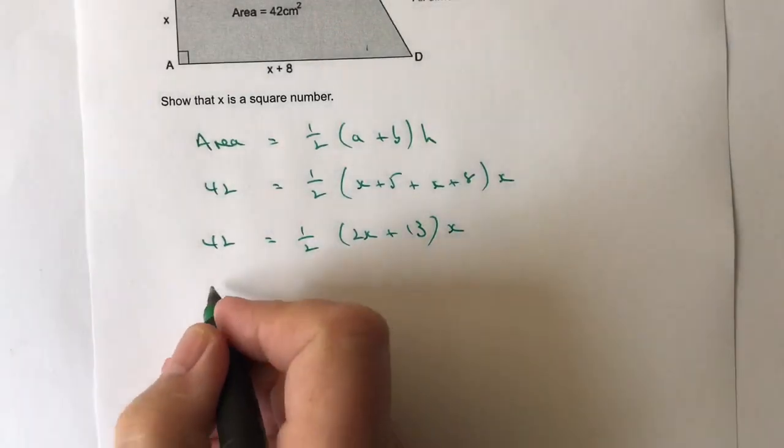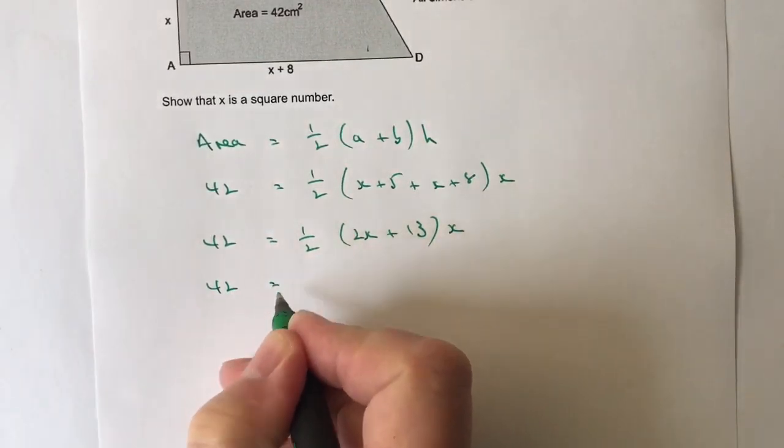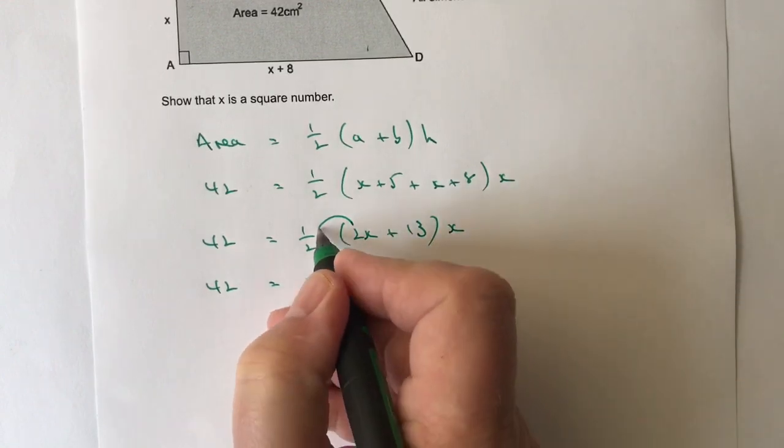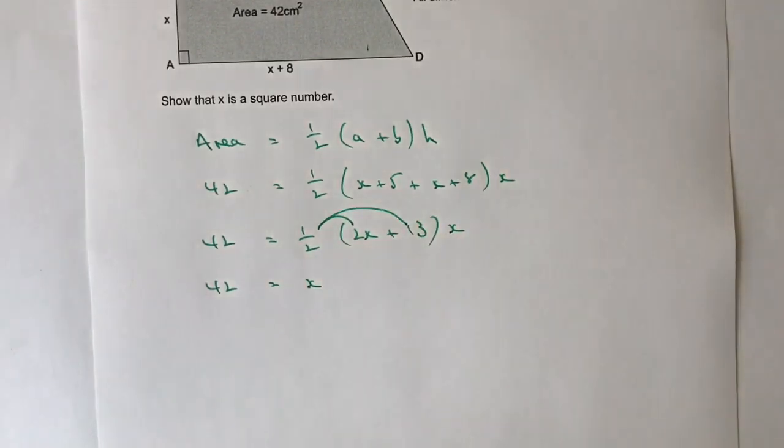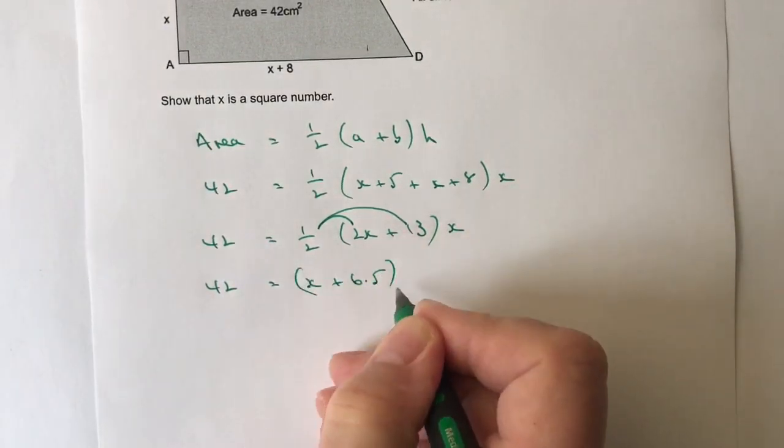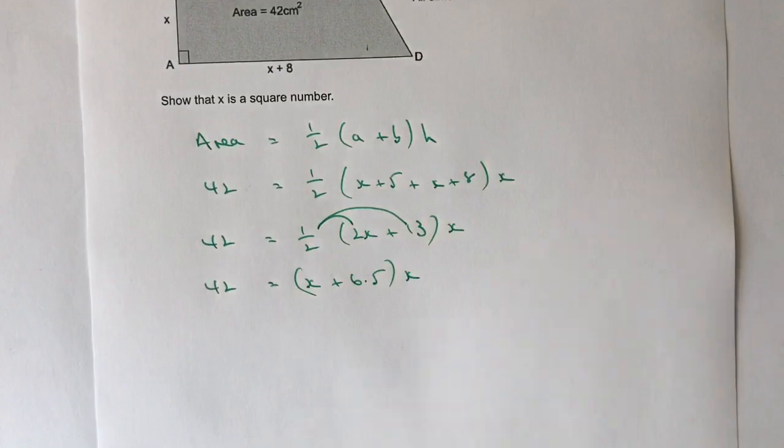So if I now multiply by a half, I'm going to get a half times 2x which is x and a half times 13 which is going to be plus 6.5. Now again, bearing in that it's multiplied by x, it's not looking great at this point but I think I'm just going to carry on and see where we end up.